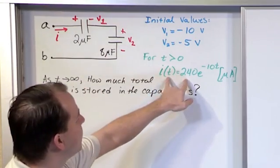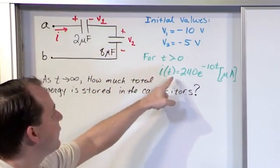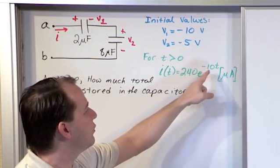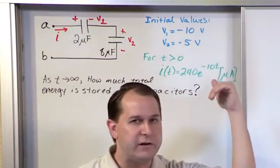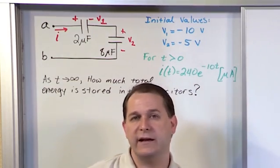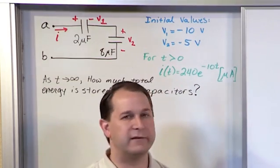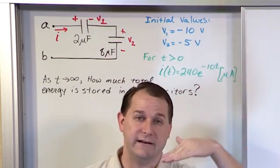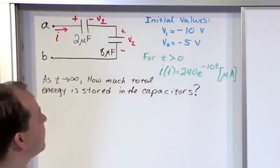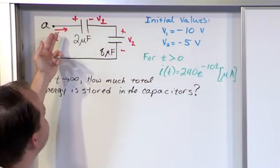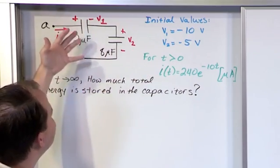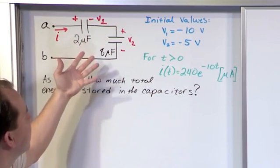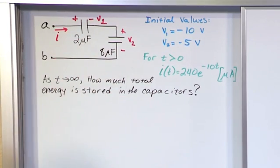And also notice that the current that we're given that's flowing through these capacitors is 240 times this exponential. When you see an exponential with a negative sign like this, then you need to start thinking that it's decaying, that's what that's physically showing you. If you plot this current, it's actually starting high and it's decaying like that. So, as time goes on, basically the current's coming in, and these capacitors are charging up, the current is going down. Eventually, everything's totally charged, everything reaches steady state.